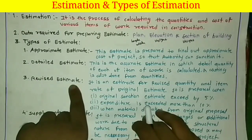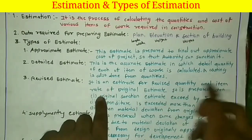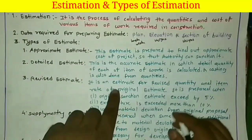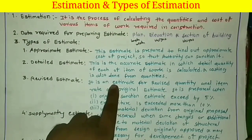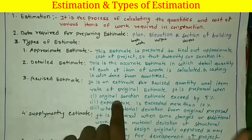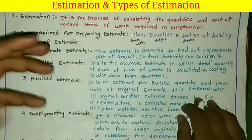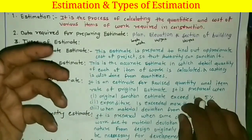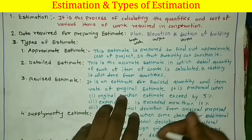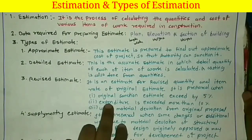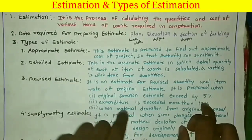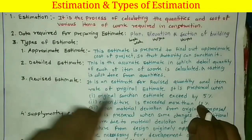Next is the revised estimate. As its name indicates, it is the estimate of revised quantities or rates from the original estimate. A revised estimate is required in three cases. First, when the original sanctioned estimate exceeds by 5% — meaning if your project is of 1 crore and the estimated cost is exceeded by more than 5 lakhs, you have to make a revised estimate. Second, when the expenditure of the project exceeds by more than 10%, you must prepare the revised estimate.